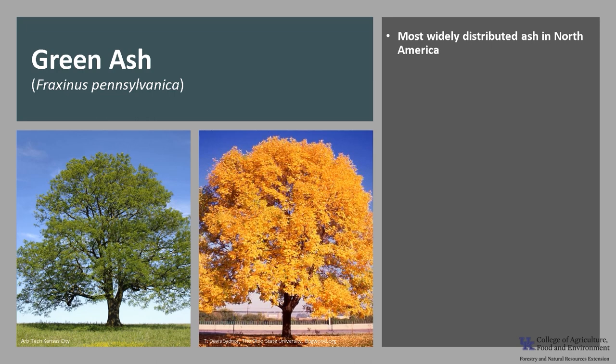Green ash, Fraxinus pennsylvanica, is the most widely distributed ash in North America. It is a member of the Oleaceae, or olive family, which is made up of about 500 to 600 species of trees and shrubs. The two genera Fraxinus and Olea are noted for the fine timber they produce.